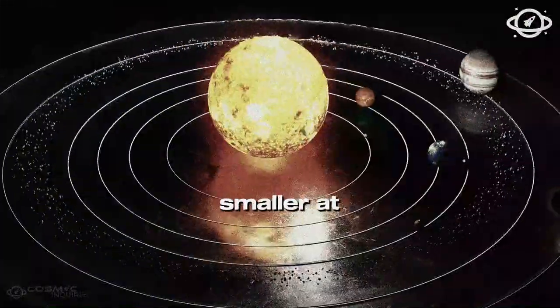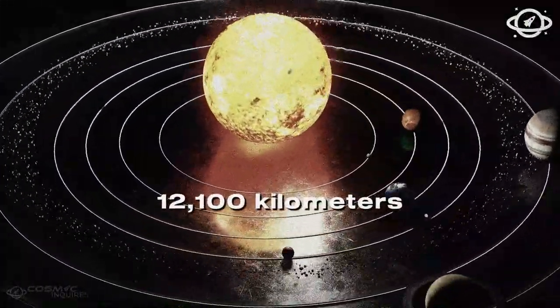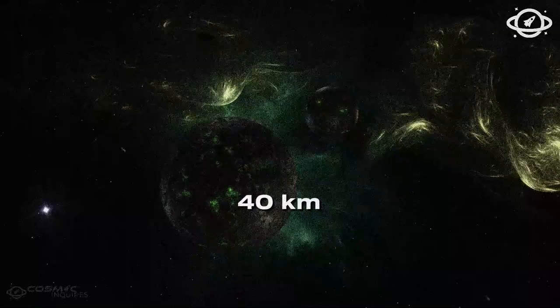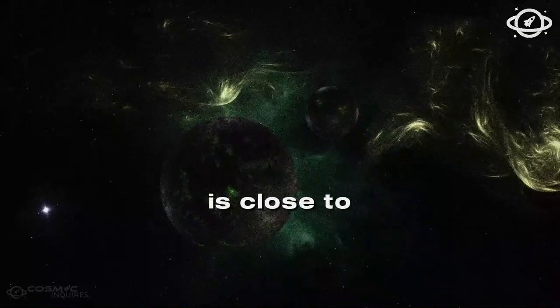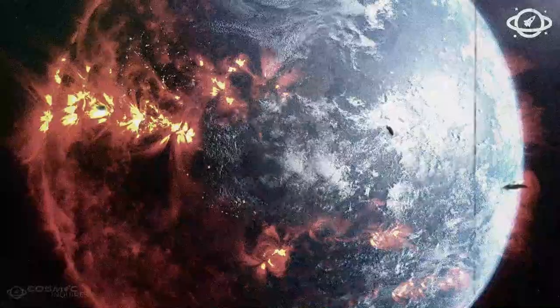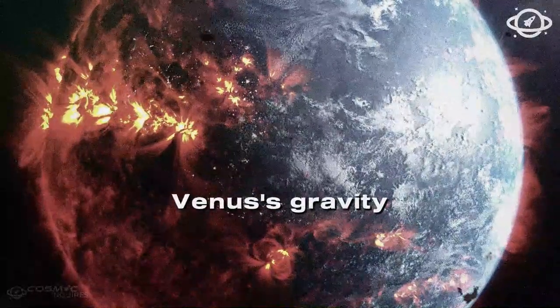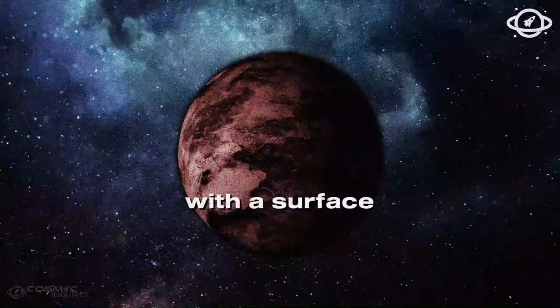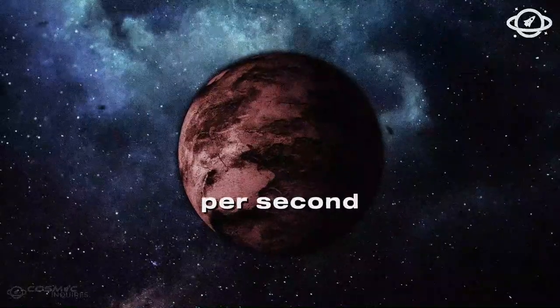Its diameter is slightly smaller at 12,100 km compared to Earth's 12,740 km, and its density is close to, at 5.3 grams per cubic centimeter, versus Earth's 5.5. As a result, Venus' gravity is only slightly weaker than Earth's, with a surface gravity of 8.9 meters per second squared.